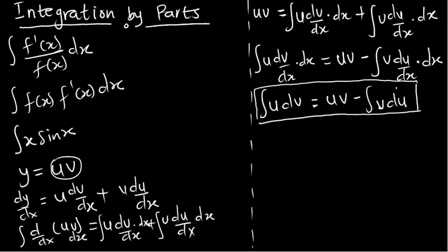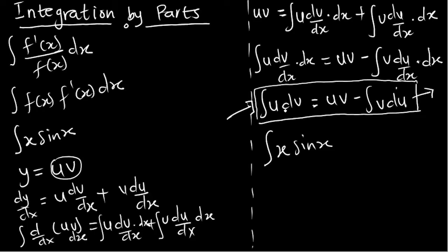Pay attention — this is the formula for integration by parts: the integral of u dv equals uv minus the integral of v du. When given a question, we choose our parameters u and dv based on the left-hand side, then solve using the right-hand side.